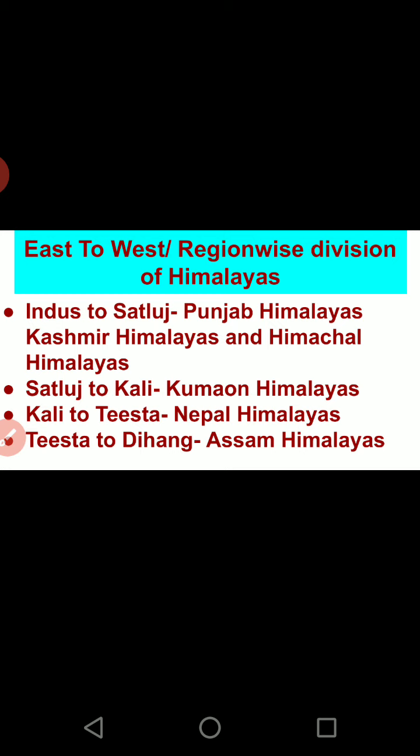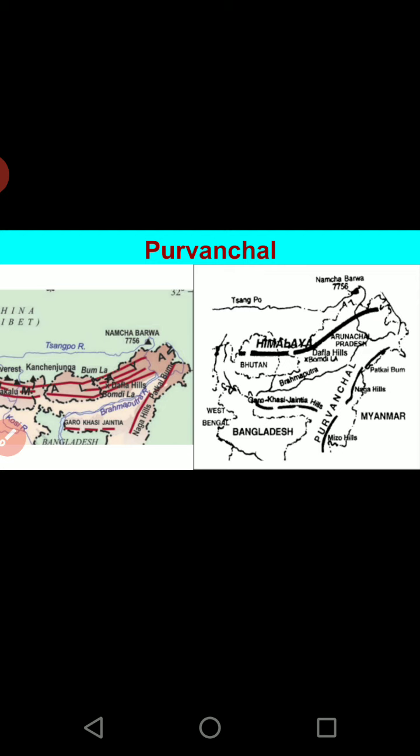This is the regional division, also called the east-to-west or west-to-east division. You must not confuse the regional division with the range-wise division. The rivers must be learned thoroughly: Indus to Satlaj, Satlaj to Kali, Kali to Tista, and Tista to Dihang.